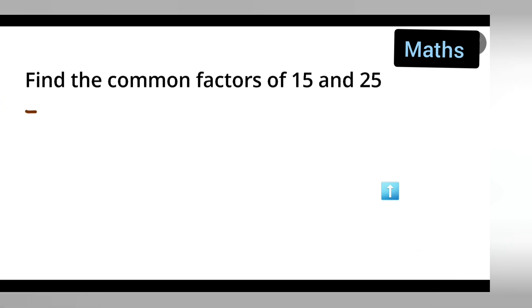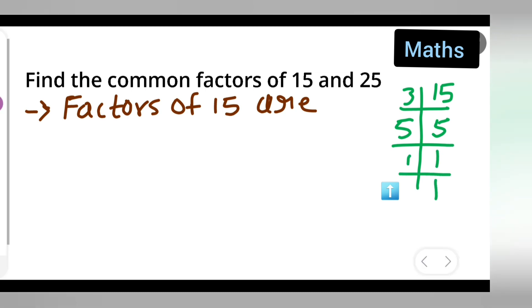First thing is, you can write down factors of 15 are. So what are the factors of 15? How are you going to find the factors of 15? Write down 15 here. 3 times 5 is 15, 5 times 1 is 5, 1 times 1 is 1. Okay. So basically these are the factors of 15.